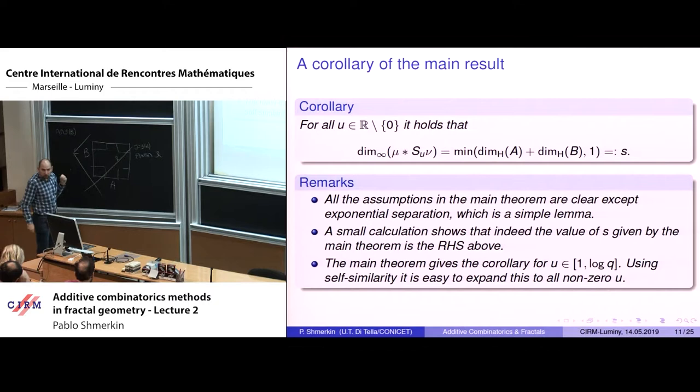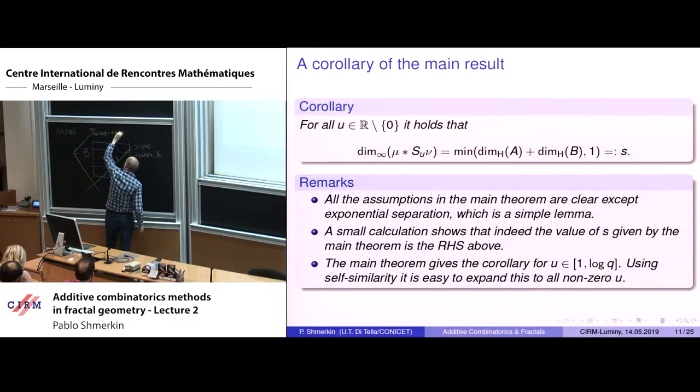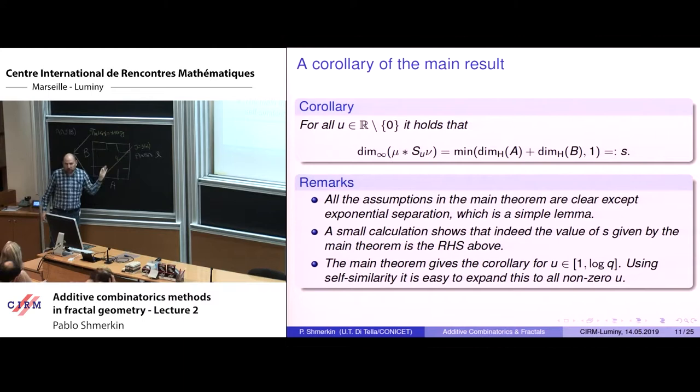Up to reparametrization, the orthogonal projection onto this line has the form π_u(x, y) = x + uy. I'm parametrizing all orthogonal projections onto non-principal directions — this is important because if it were horizontal or vertical, everything would be trivially false. The line L is a fiber of this map.